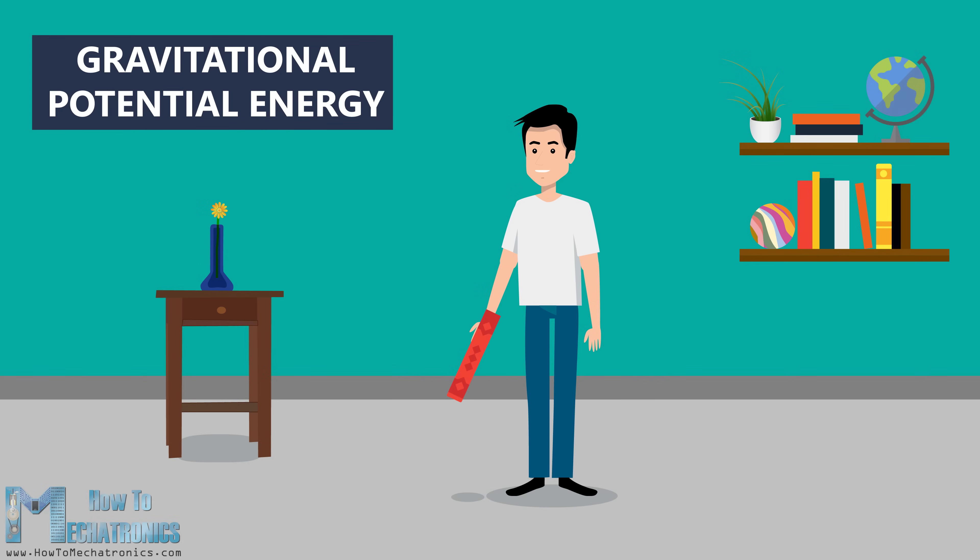There is gravitational potential energy stored in an object as a result of its vertical position or height. If you hold a book 1.5 meters above the ground, we can say that the book has gravitational potential energy. You have added energy to the book by lifting it up, or in other words you have done work on that book, and if you let it go, gravity will exert a force, and the book will fall down to the ground.